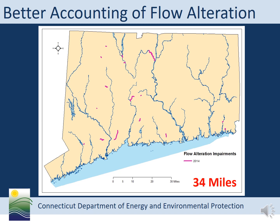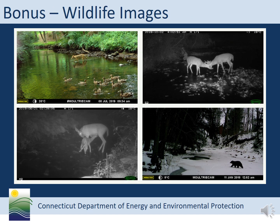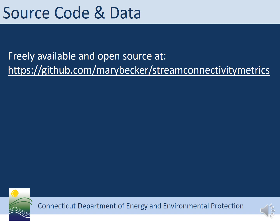As mentioned at the beginning of this presentation, before we began this project, we didn't have a good handle on the scope of the issue of flow-impaired streams. The department is required to identify flow impairments for the integrated water quality report, which goes to the EPA every two years. In 2014, we had identified 34 miles of flow-impaired streams throughout the state. In 2016, after we began this project, we identified 159 miles of flow-impaired streams. As an added bonus to this trail camera project, we get lots of wildlife images, which is always fun. All of the source code and data for this project are freely available and open source at github.com/marybecker/stream-connectivity-metrics.